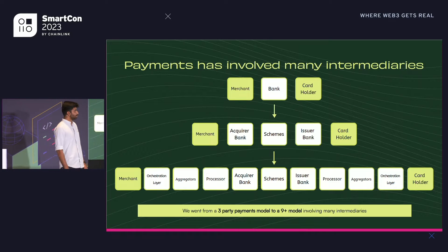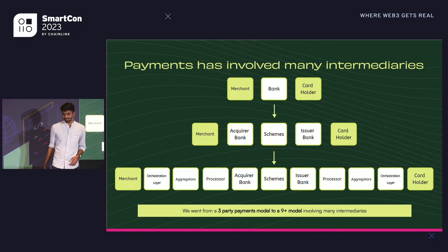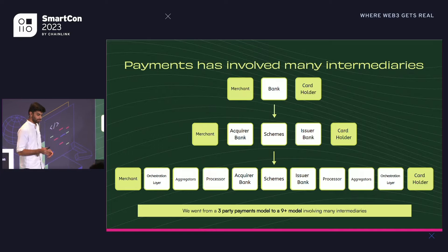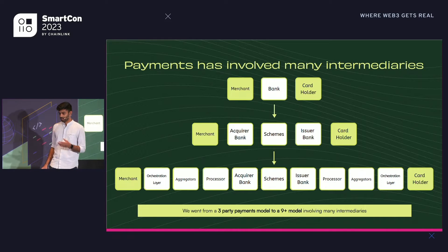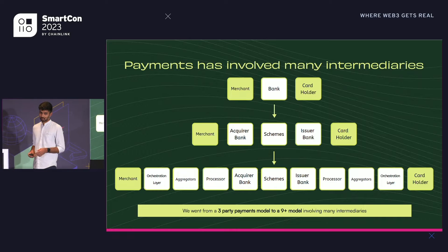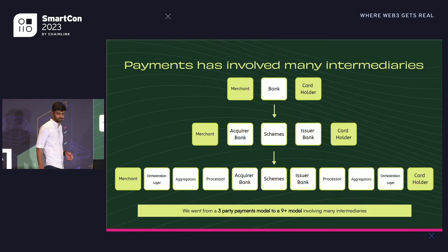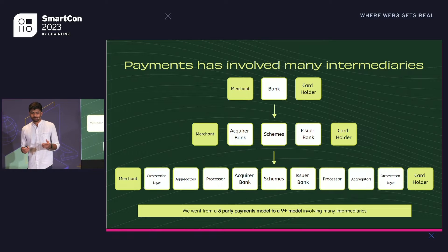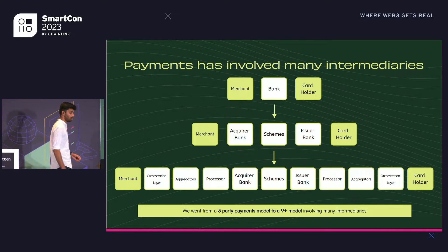Talking about intermediaries, we went from a three-party system where we just had the bank, a cardholder, and a merchant, to a nine-plus party model where we have an issuing bank, which issues cards to the cardholder, an acquiring bank which is the merchant's bank, a payment scheme in the middle like Visa or MasterCard that connects the two, plus multiple intermediaries from payment processors to aggregators to orchestration layers.